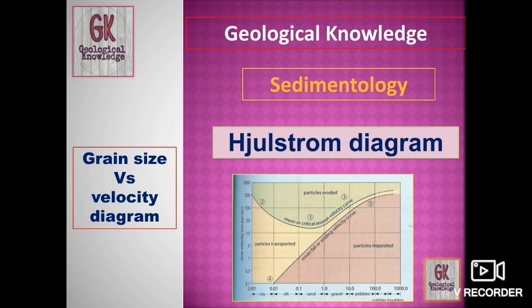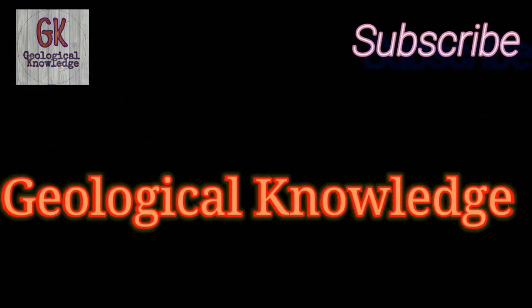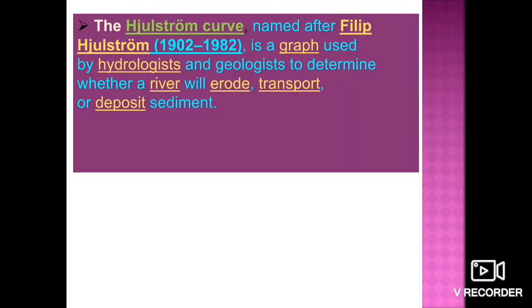The competence of a river is the maximum size of the load it can carry, largely determined by velocity. The Hjulström curve is named after Philip Hjulström. It is a graph used by hydrogeologists and geologists to determine whether a river will erode, transport, or deposit sediments.